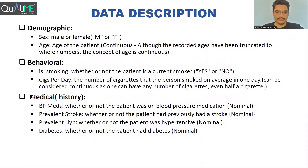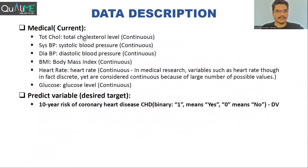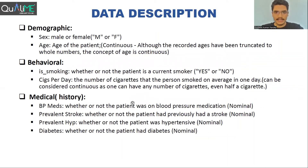These are the details about the features present in the dataset. There are some demographic features, some behavioral features, some features representing the medical history of the patient, while some represent the current medical details, and then there is a target variable. There is a column named 'sex' to show whether the patient is male or female, then 'age' column consists of the age of the patient. 'Smoking' is a binary variable showing whether or not the patient is a current smoker, and 'cigarettes per day' shows the number of cigarettes smoked on a daily basis.